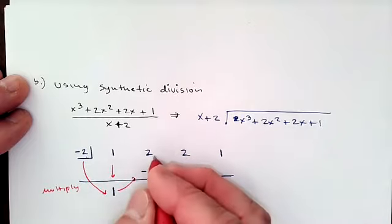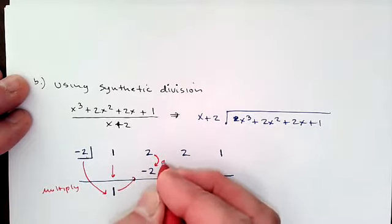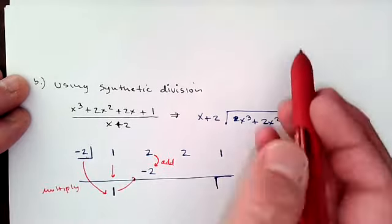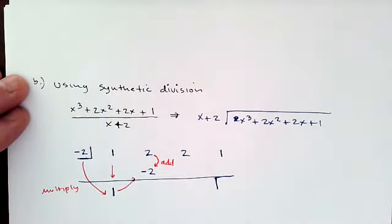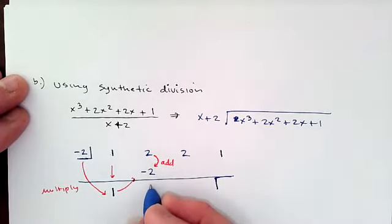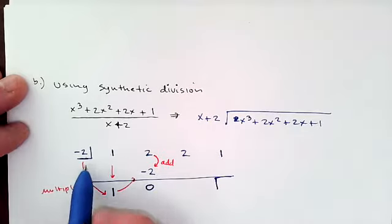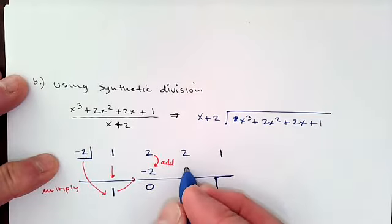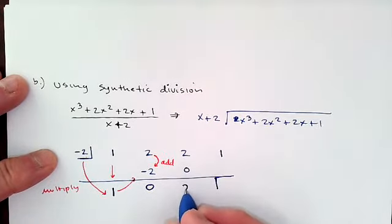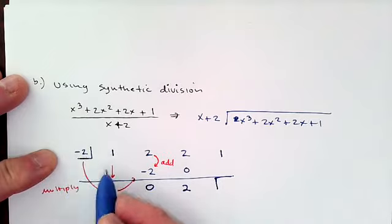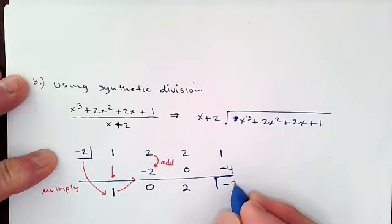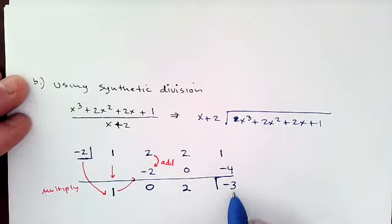From here we add — not subtract as in long division. So 2 plus negative 2 gives 0. Then multiply negative 2 times 0, which gives 0. Add those numbers: that gives 2. Negative 2 times positive 2 gives negative 4. 1 plus negative 4 is negative 3. You can start to see what this means: when we divide a linear term x plus 2 into a cubic, we end up with a degree 2 result.